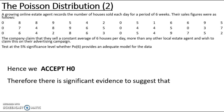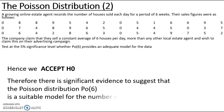Therefore there is significant evidence to suggest that the Poisson distribution Po(6) is a suitable model for the number of houses sold per day by the estate agent.